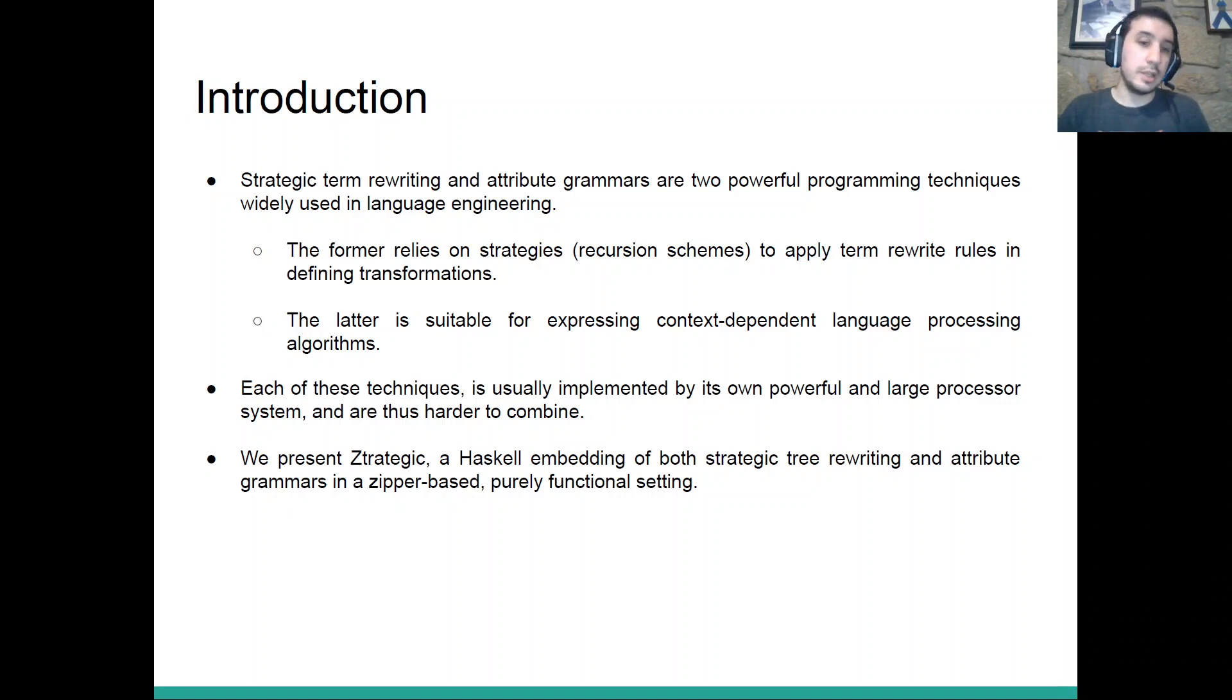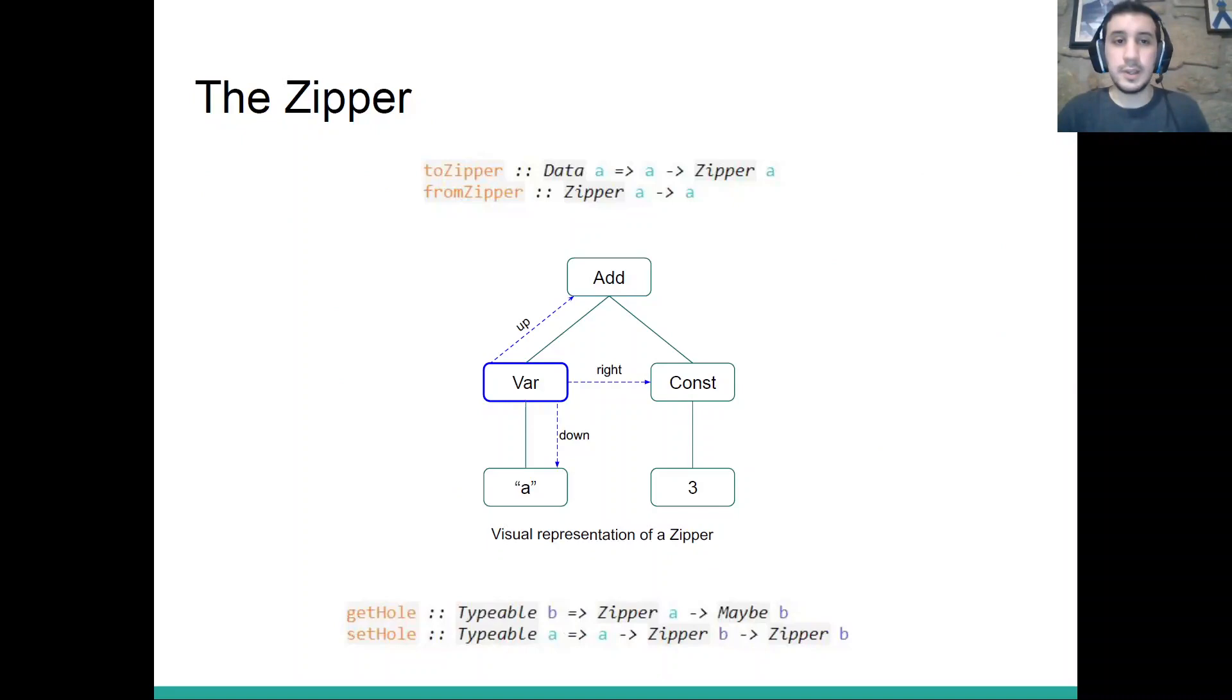And the second technique is attribute grammars, which allows us to define attributes for given nodes. They are very powerful techniques, but they are typically not combined together. In our library, strategic Haskell embedding of both strategies combined with attribute grammars, we can get the best of both worlds.